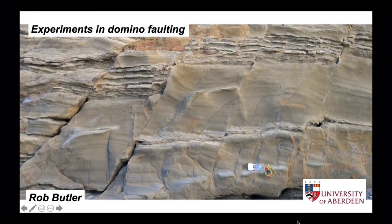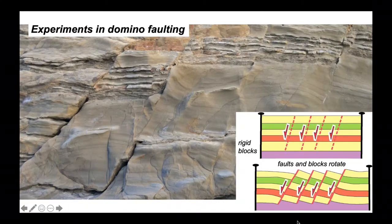A commonly used description for the normal faulting that accommodates crustal extension is the domino model. In this model, the upper crust is assumed to stretch by an array of parallel planar normal faults that slip and rotate as stretching is accumulated across this area.